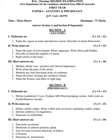Section A: Anatomy. Section B: Physiology. First, elaborate on 12 marks question. First one: name the organs of the male reproductive system and describe in detail about the testes.